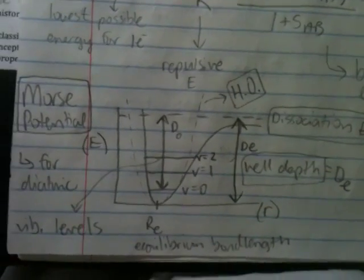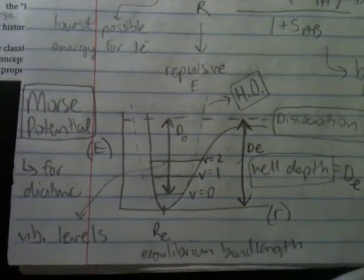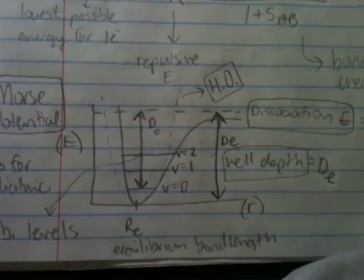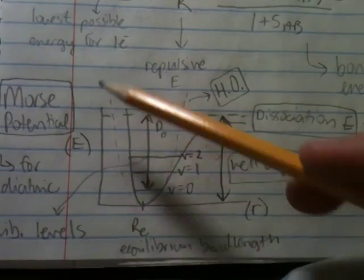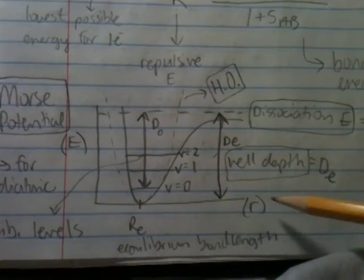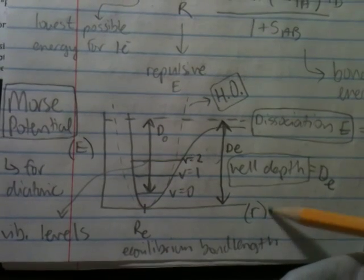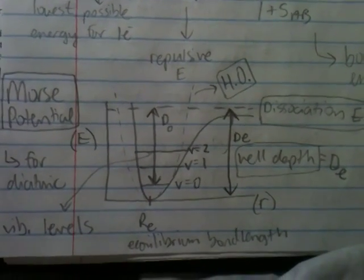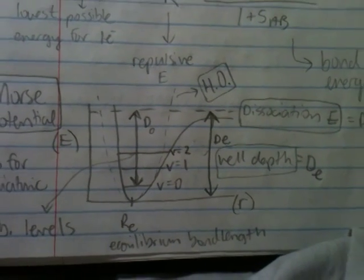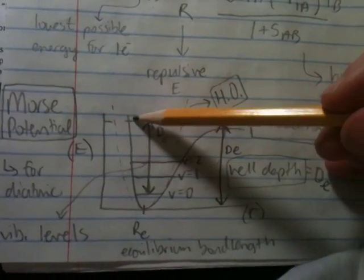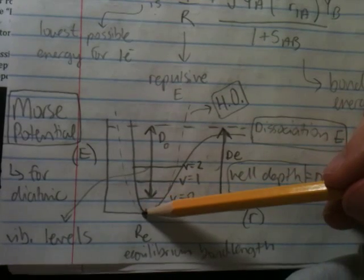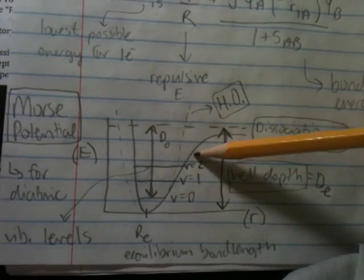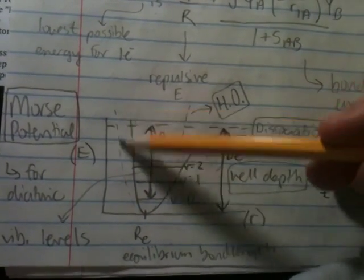Now, visually, and conceptually, you can describe this using a Morse potential diagram. Where your y-axis is your energy. X-axis is radius, some distance.